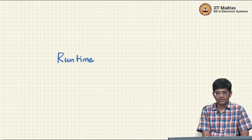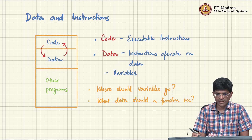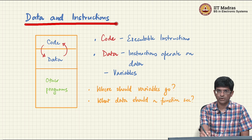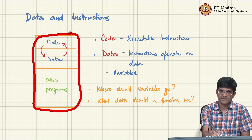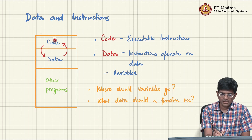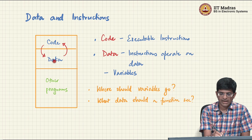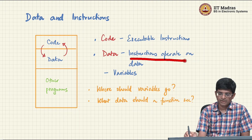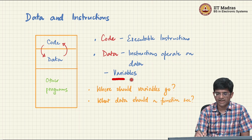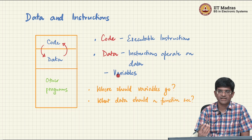Now we have seen a lot about how you declare and define functions in C. We also need to understand the runtime support for functions — what actually happens when I call a function. In order to understand that, we need to think about what is in the memory of a computer when it is running a program. If we think of the overall block as the memory available, some of it stores code — executable instructions — and some of it stores data: variables, strings, constant values, and other things required for the program.